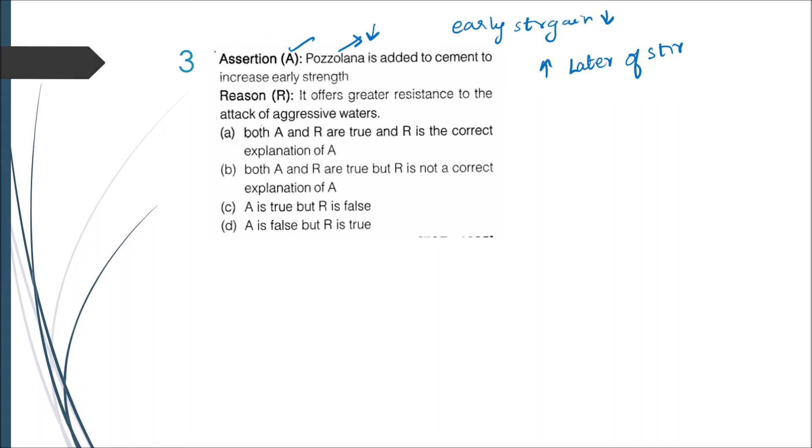Whereas the reason they give - it offers greater resistance to the attack of aggressive water - this is true. Because pozzolana is very fine, and due to this very fine property, the porosity will be very less. So due to less permeability there will be less vulnerability to the attack of aggressive waters. So the answer is A is false but R is true.